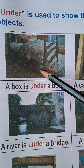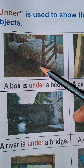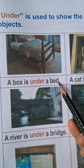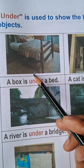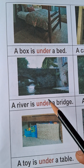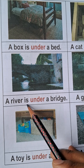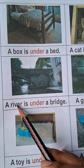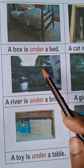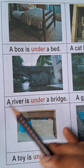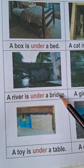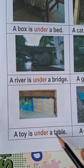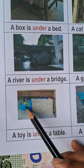Here in this picture you can see there is a bed, and under it there is a box — a box is under a bed. In the second picture, a river is under a bridge. River means nadi, bridge means pul, so the river is under the bridge — a river is under a bridge. In this picture a toy is under a table.